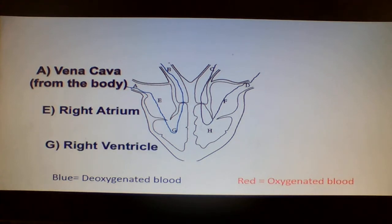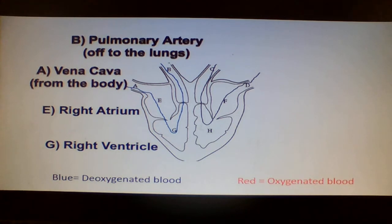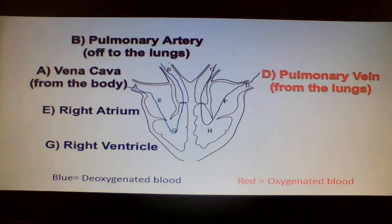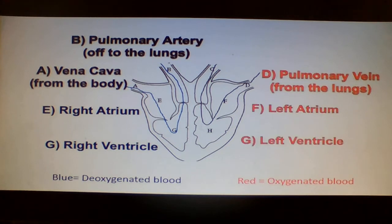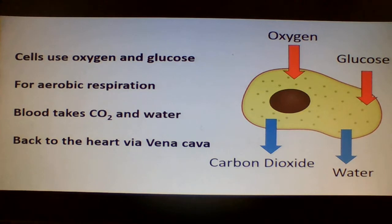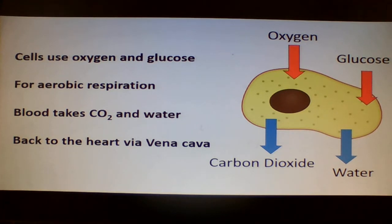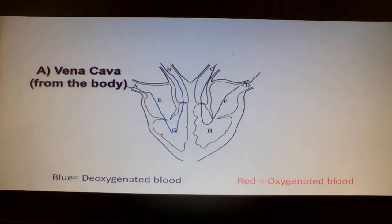Right atrium, right ventricle, pulmonary artery, off to the lungs, pulmonary vein, then the left atrium, left ventricle, aorta. Sounds use oxygen and glucose for aerobic respiration. Blood takes CO2 and water back to the heart via vena cava.